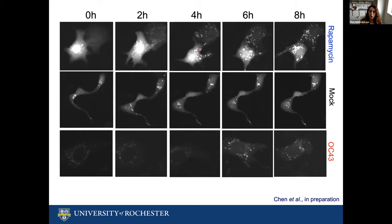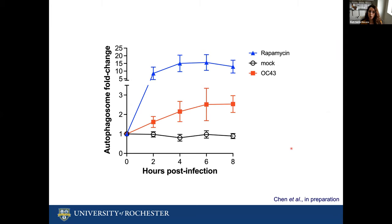Over time, these autophagosomes increase not only in number but also in size, and then by eight hours post-treatment we start seeing a decline in autophagosome number, which is an indication of the resolution of this pathway — fusion with lysosomes will result in the elimination of these structures. In the mock-treated cells, we don't see much fluctuation in autophagosome number over time. In the OC43-infected cells, we see increasing autophagosomes, particularly at six hours post-infection, but unlike the rapamycin-treated cells, we don't see the enlargement in autophagosomes and the number seems to remain more steady. These quantifications of the kinetic study confirm: mock-treated cells show little fluctuation, rapamycin-treated cells show a huge increase followed by plateau and resolution, and OC43-infected cells show an increase in autophagosome formation but without the enlargement or resolution of that pathway.